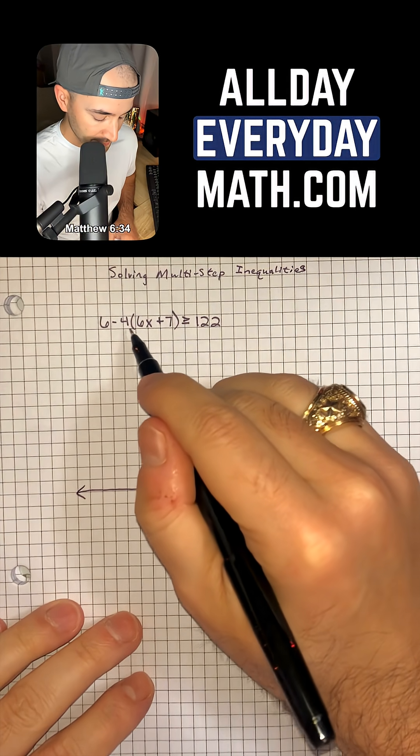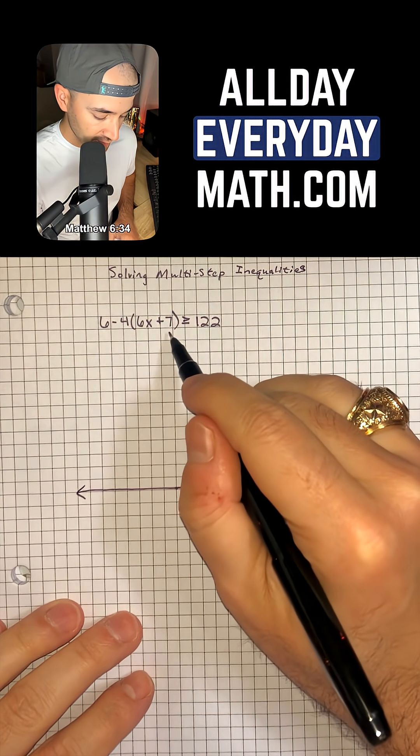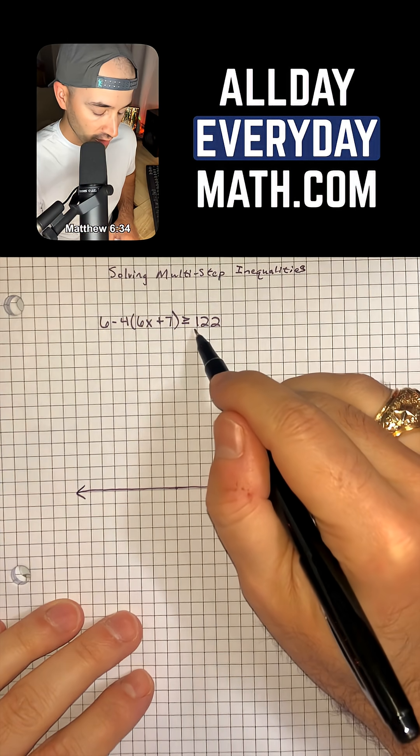So we have 6 minus 4 times parentheses 6x plus 7 is greater than or equal to 122.